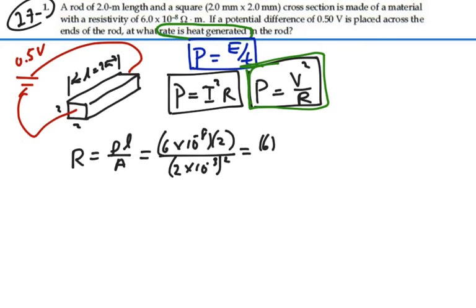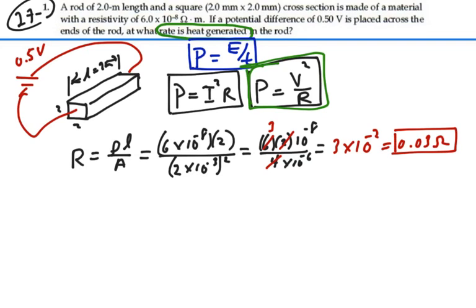So this is 6 times 2 times 10 to the minus 8 over 4 times 10 to the minus 6, which equals 3 times 10 to the minus 2, or 0.03 ohms. That is the resistance of the rod.